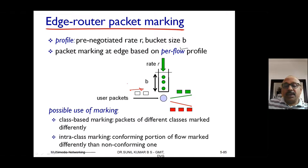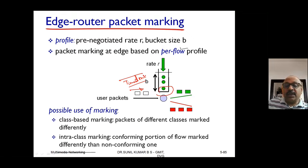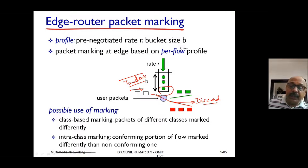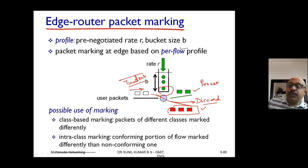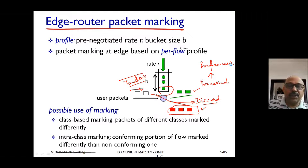Intra-class marking conforms the portion of flow marked differently from the non-conforming portion. Sometimes a packet arrives but has already timed out — there is no point processing it. Rather, we have to discard that packet because it has lost its time to reach the destination. It was delayed and stuck in the network, so processing it further is of no use. The marking process takes care of which packets are to be discarded and which are to be processed, based on preferences and priorities.